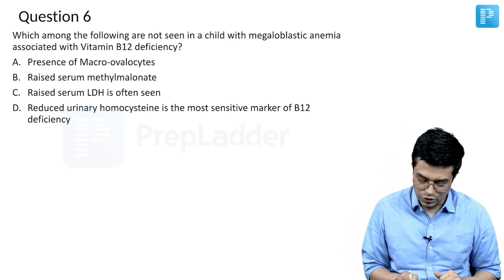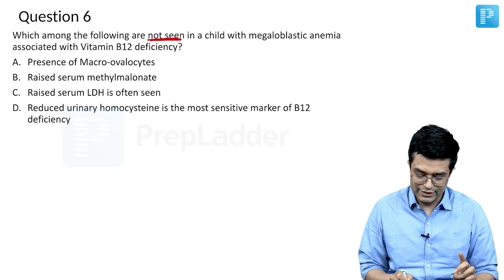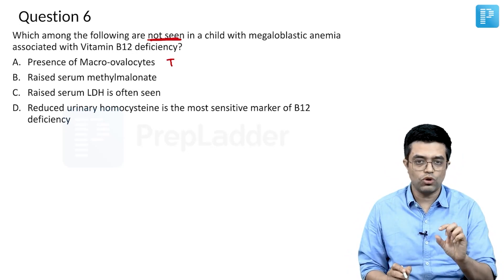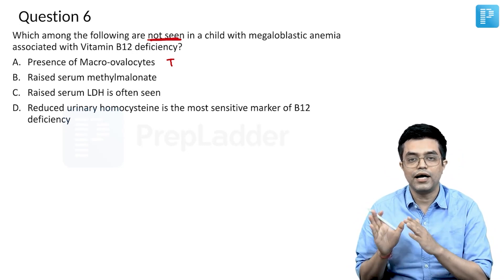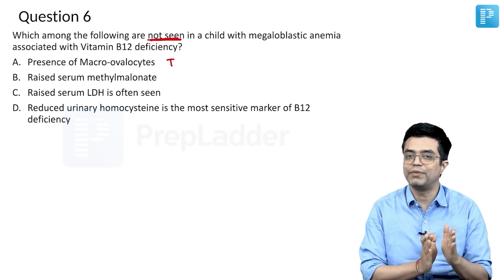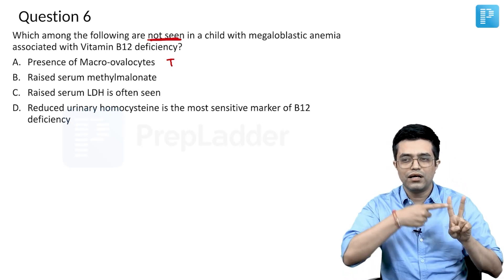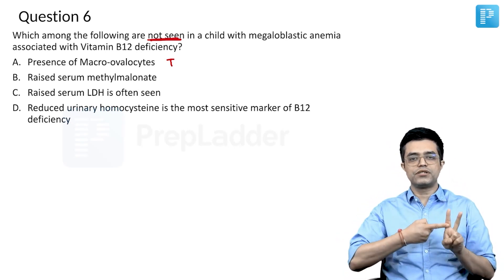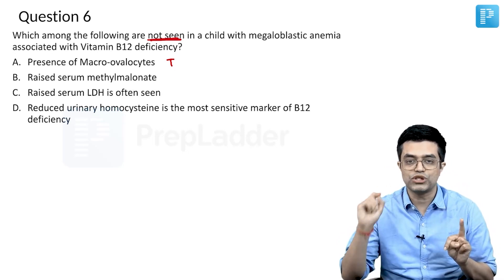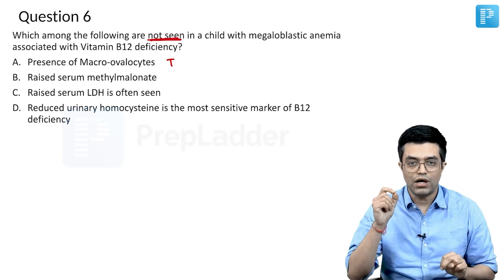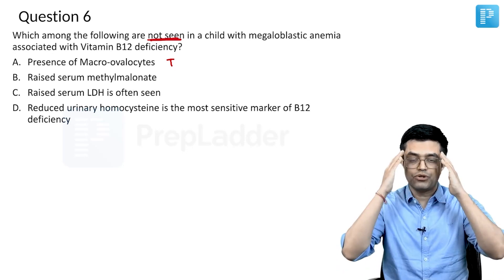They are asking what is NOT seen, so let's look at each option. Presence of macro-ovulocytes is a TRUE statement — macro-ovulocyte RBCs are one of the early features, along with hypersegmented neutrophils on peripheral blood smear. These two are the cardinal manifestations of B12 deficiency on peripheral smear: number one, macro-ovulocytes; number two, hypersegmented neutrophils.